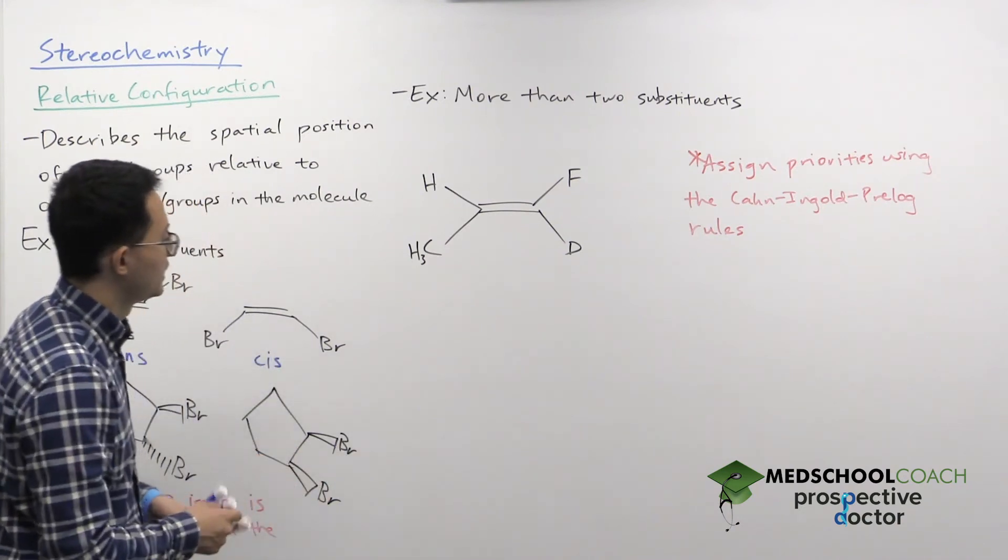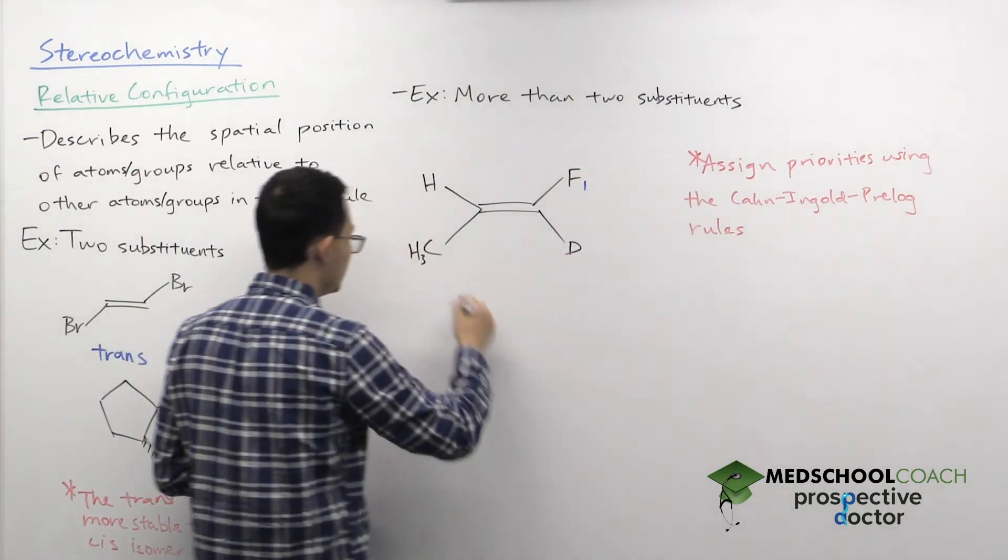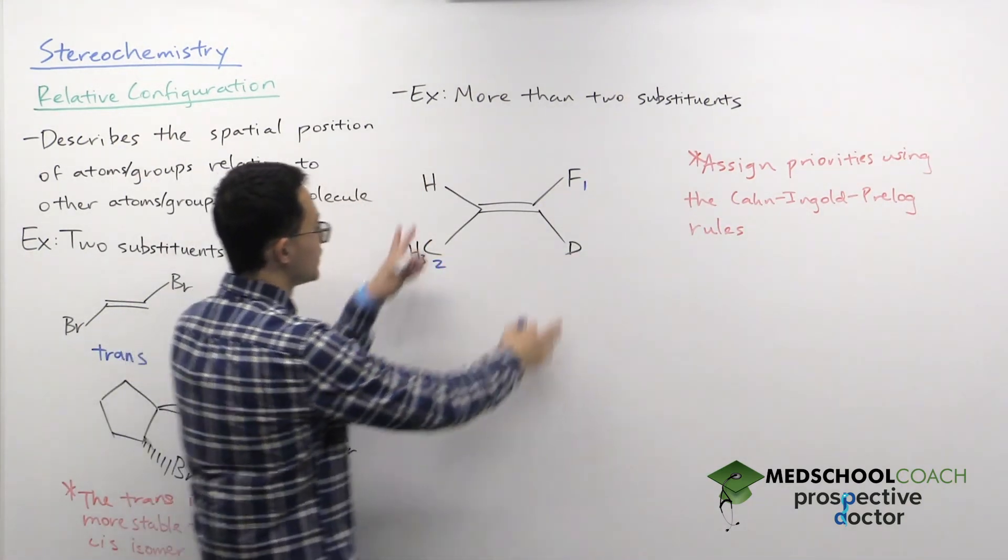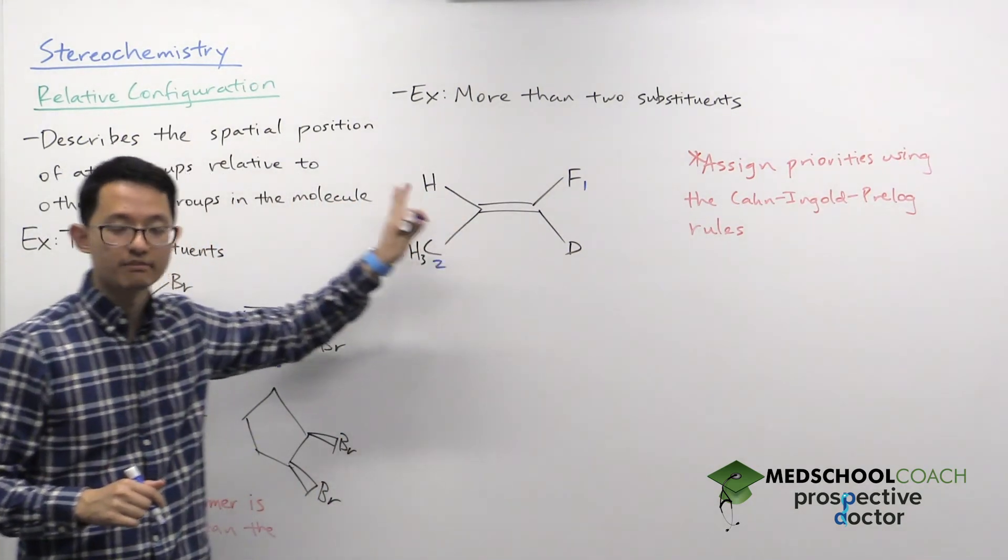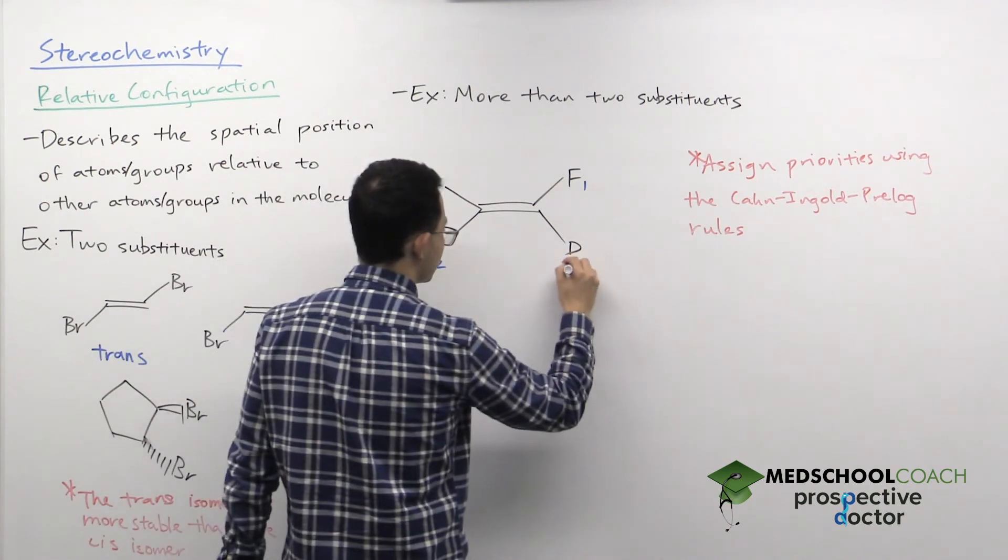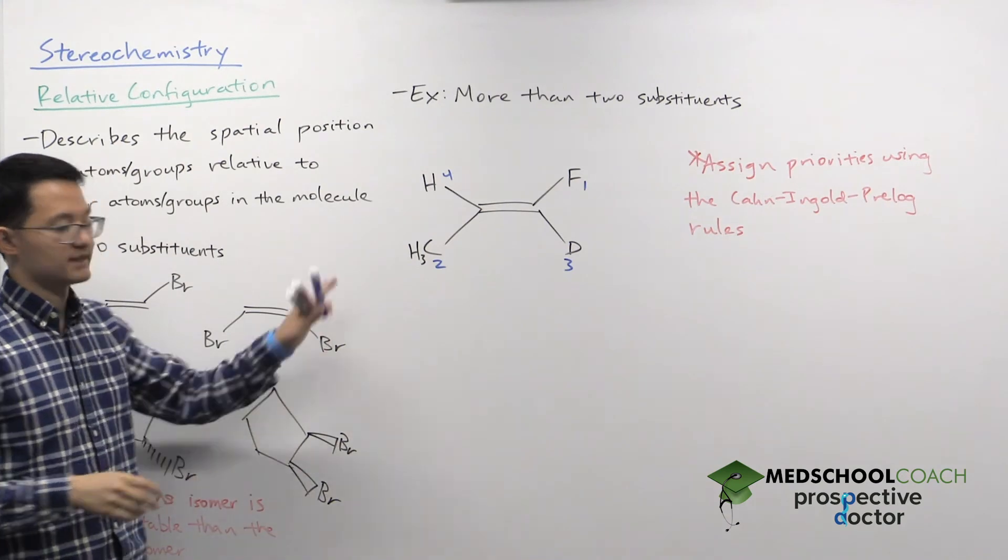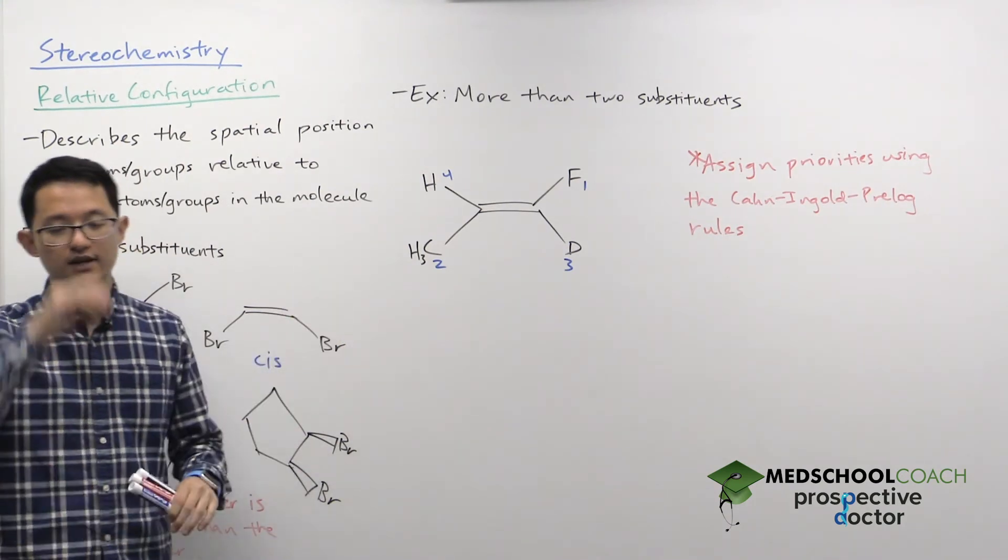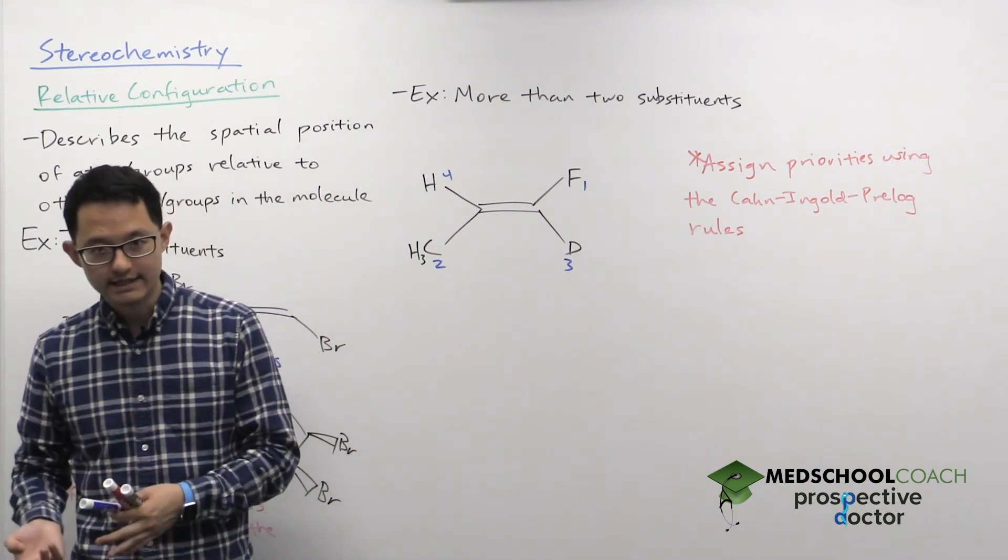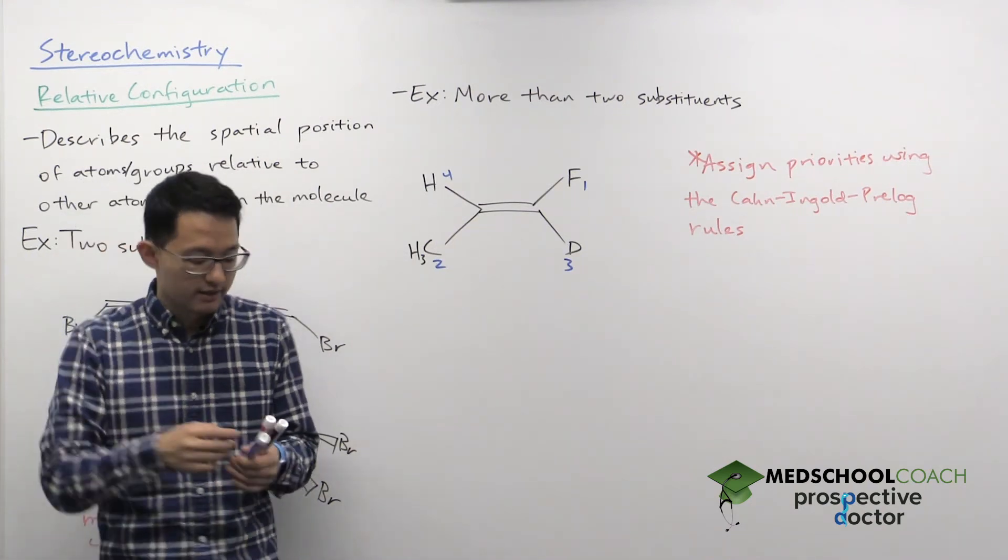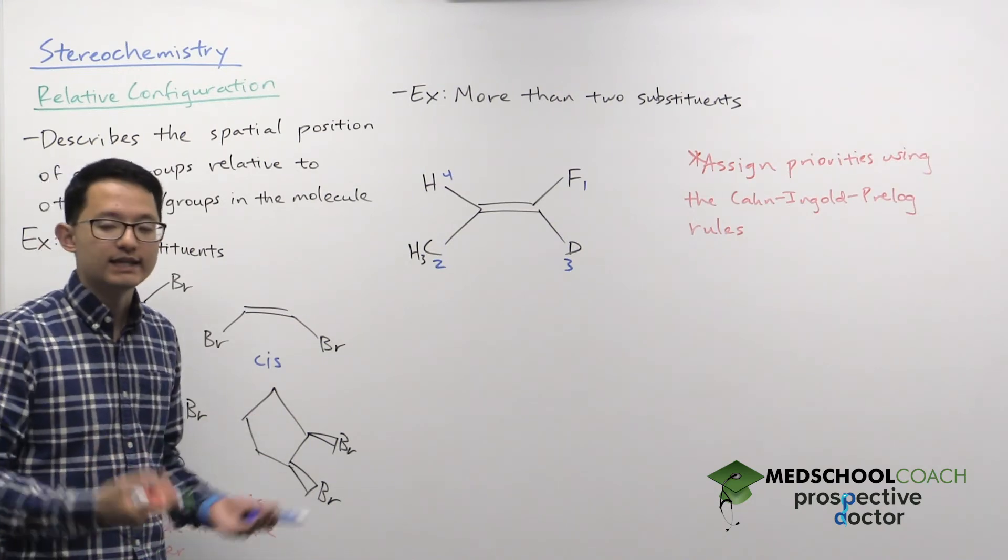So here, if we're looking at atomic number, fluorine is going to have the greatest atomic number, then carbon. Deuterium and hydrogen have the same atomic number, but deuterium has a greater atomic mass. So this is three, and this is four. So now the assignment here is not cis or trans. What you assign is E or Z. And a nice way to think about it is just think of Z like cis, and E is like trans.